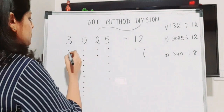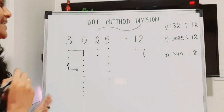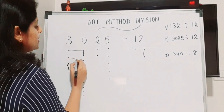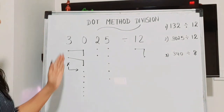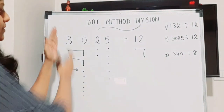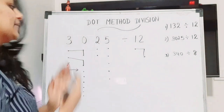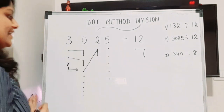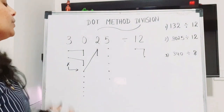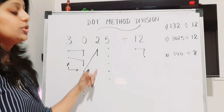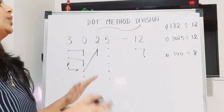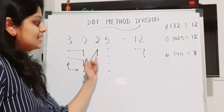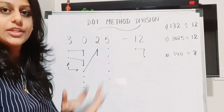Now we can group: one dot in the first column and two in the second. We continue — one and two, then again one and two. The first column is now complete. Moving to the next set, we check one in this column and two in the consecutive column and form another group.